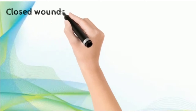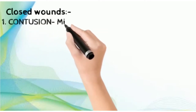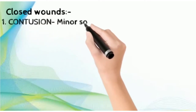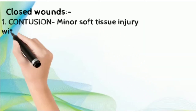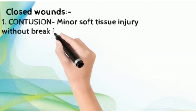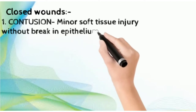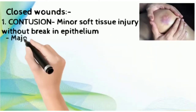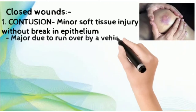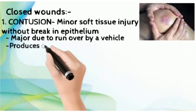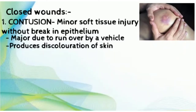Starting with closed wounds, the first type is contusion. In contusion, it is a minor soft tissue injury without any break in the epithelium, as you can see in the pictures. It can be major also if there is a run-over by a vehicle, and there is a discoloration of skin.